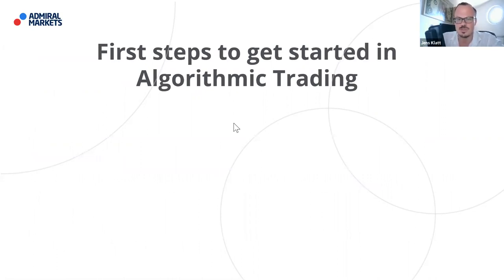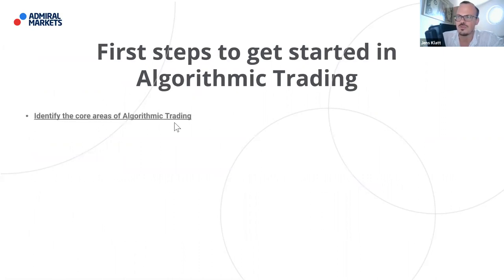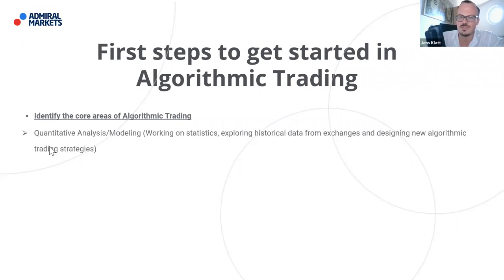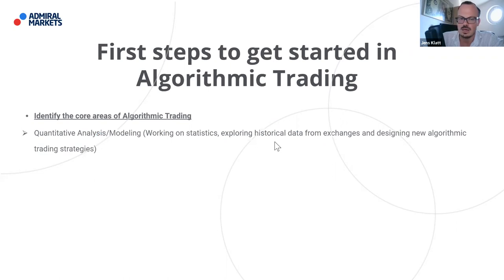What are the first steps to becoming an algorithmic trader? First, you have to identify the core areas of algorithmic trading, which means becoming an expert — or at least getting used to — quantitative analysis and modeling: working on statistics, exploring historical data from exchanges, and designing new algorithmic trading strategies. The point around historical data is crucial. You can have a crush on algorithmic trading, but if you don't have any data to work with, that's where the trouble starts.